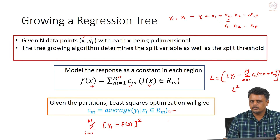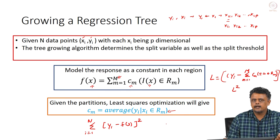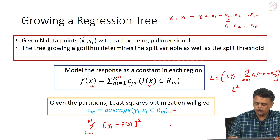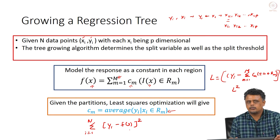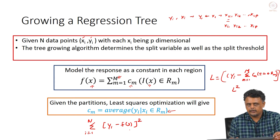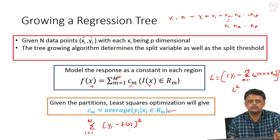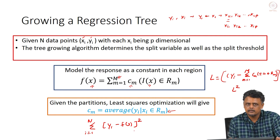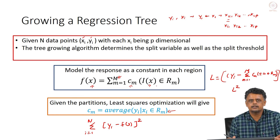So if we know the number of partitions and pose this as a least squares problem, the response at each partition is the average of the training data responses falling into that region. However, determining the number of partitions beforehand is computationally very difficult, because there are so many possible combinations of regions to optimize over. Therefore, a greedy strategy is adopted.